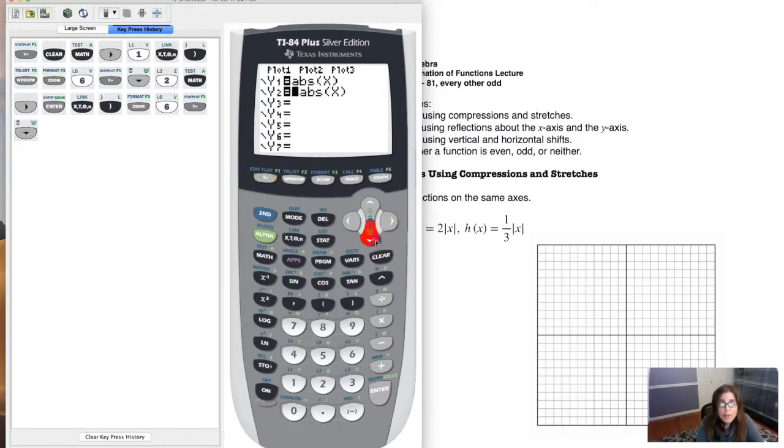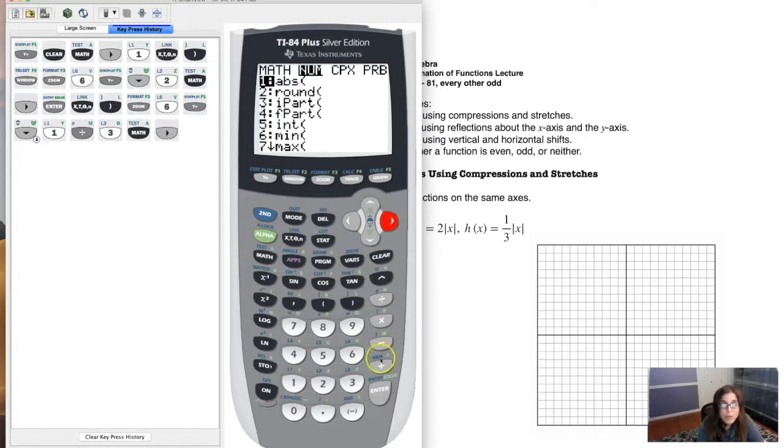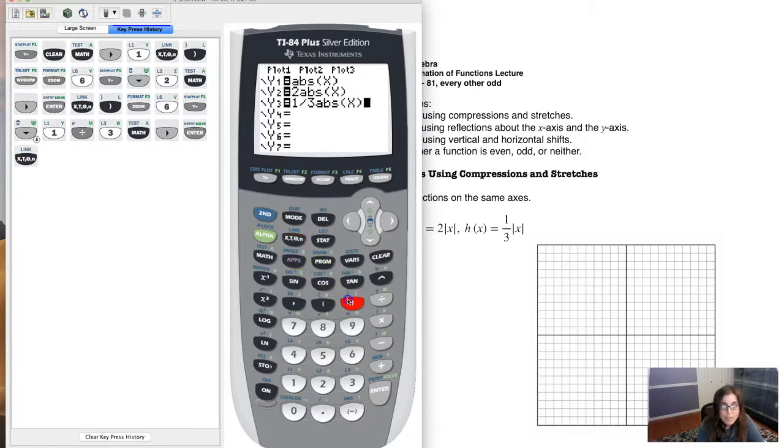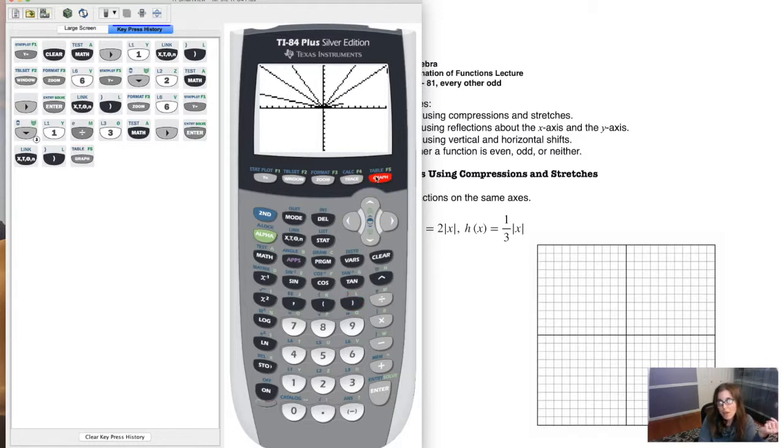So let's go ahead and go down to y3. And I want one third times the absolute value of x. Now I don't need to hit zoom 6. I can, but I haven't adjusted my window, so I can just hit graph. And you see that one third absolute value of x come in.